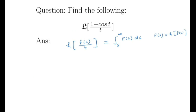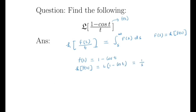Note that here we can take f(t) = 1 - cos t to fit the formula. So our f(t) is 1 - cos t. What is L{f(t)}? The Laplace transformation of 1 - cos t. Since the Laplace transformation is linear, it is L{1} minus L{cos t}. L{1} is 1/s, and L{cos t} is s/(s² + 1).